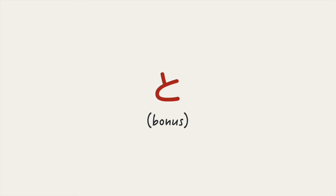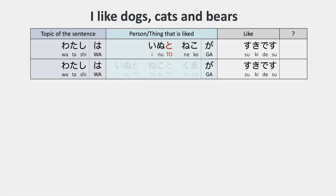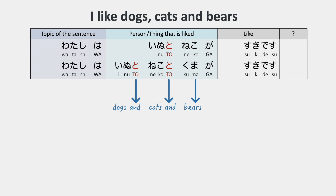Here's a quick lesson for the to particle. I like dogs and cats. Watashi wa inu to neko ga suki desu. The to particle means and, so inu to neko means dogs and cats. I like dogs, cats, and bears. Watashi wa inu to neko to kuma ga suki desu. You see that the difference between the English and and the Japanese to particle is that the to particle is put between each item. So inu to neko to kuma means dogs and cats and bears.